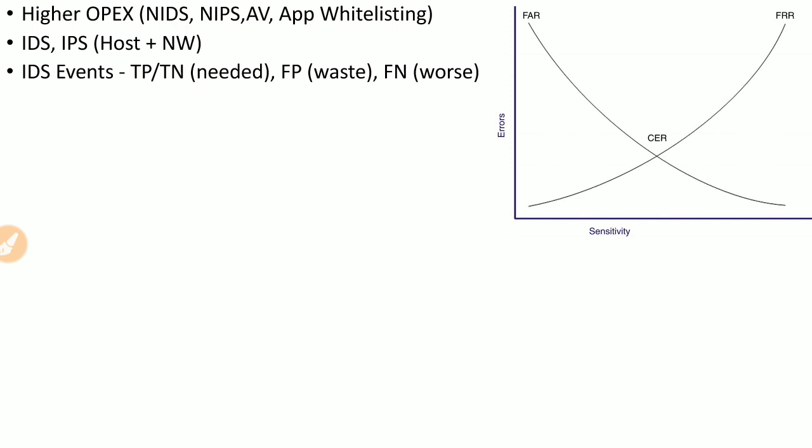False Acceptance Rate means an IPS is falsely accepting an illegal operation. False Rejection Rate means the IPS is falsely rejecting a legitimate operation.